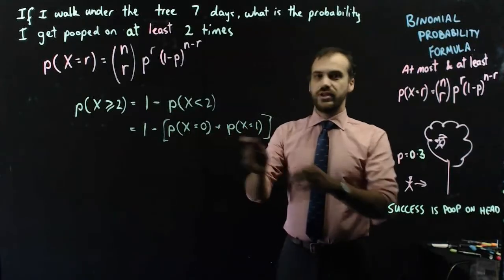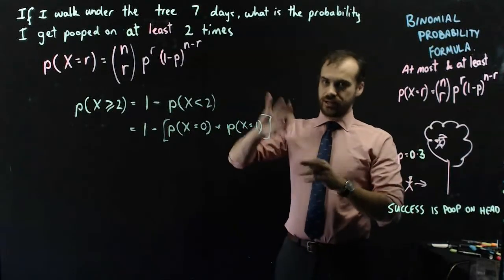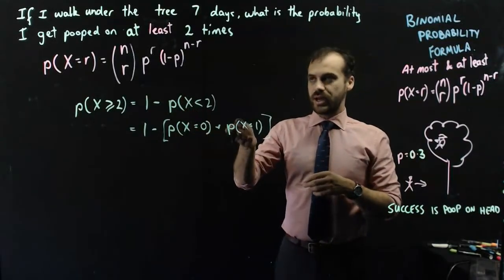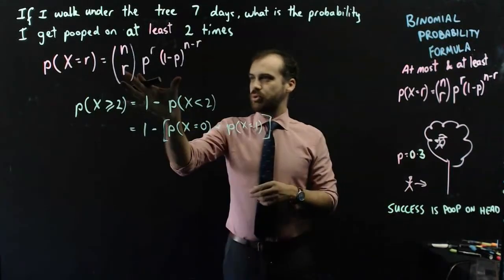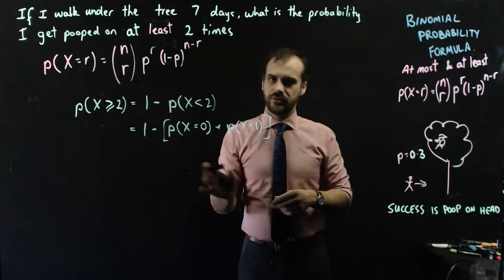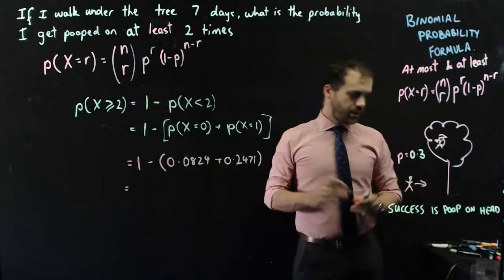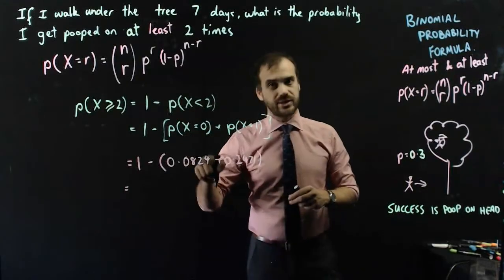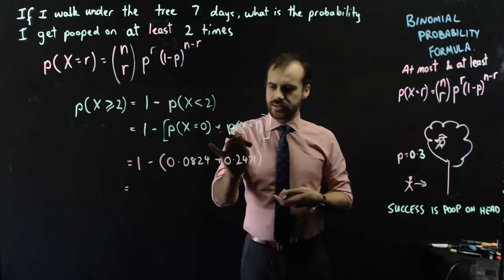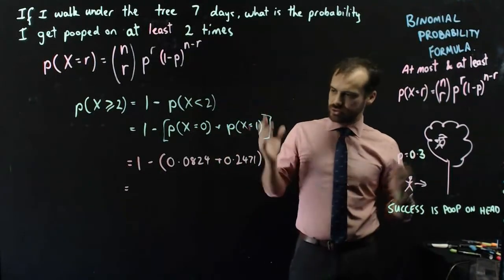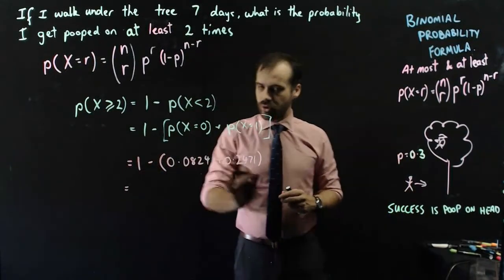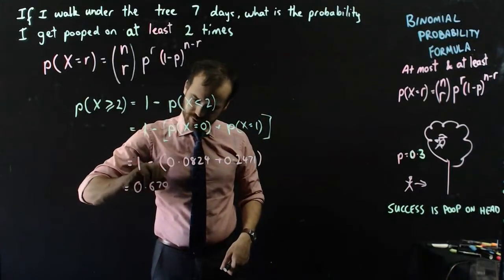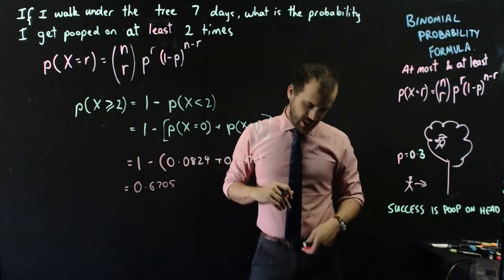And then I just need to figure this out. Now, I figured that out in the previous question actually. I already know what those numbers are. If you rewind it a minute, you'll see that the probability that x equals 0 is 0.0824 dot dot dot. The probability that x equals 1 is 0.2471 dot dot dot. And we can say 1 minus that, which ends up being 0.6705.